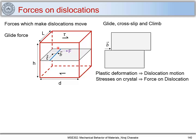The stresses acting on this crystal can cause a force on the dislocation line, marked as F. The stresses create a force on the dislocation line to move the dislocation from one end of the crystal to another. To give more physical meaning, we can say that work done on this crystal by the stresses must be equivalent to the work done on the dislocation by this force.